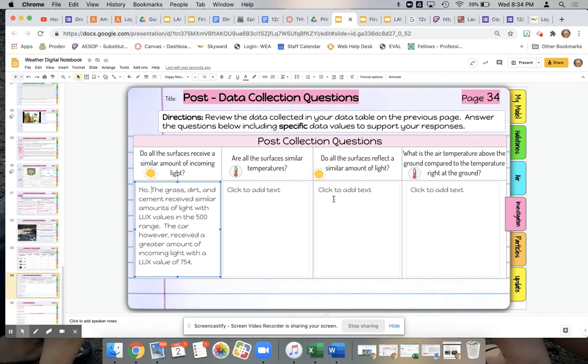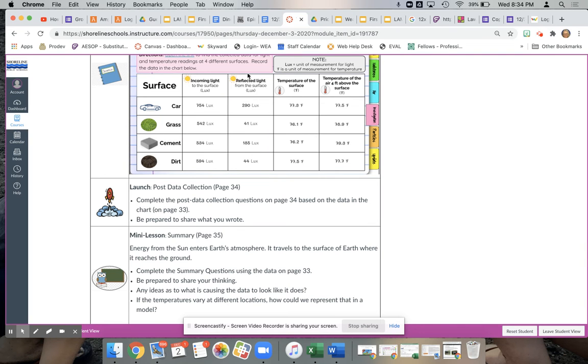Again, go back. Do all the surfaces reflect a similar amount of light? So now you're going to come back here. What do you think? Looking at those values. Again, you're going to want to include specific values in your data and response.